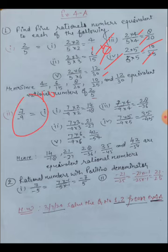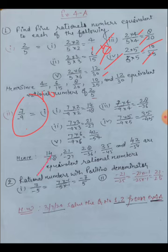For seven upon minus nine, we don't need to first convert to positive denominator since the question only asks for equivalents. Multiply by two, three, four, five, and six to get: fourteen upon minus eighteen, twenty-one upon minus twenty-seven, twenty-eight upon minus thirty-six, thirty-five upon minus forty-five, and forty-two upon minus fifty-four. These are the five equivalent rational numbers of seven upon minus nine.